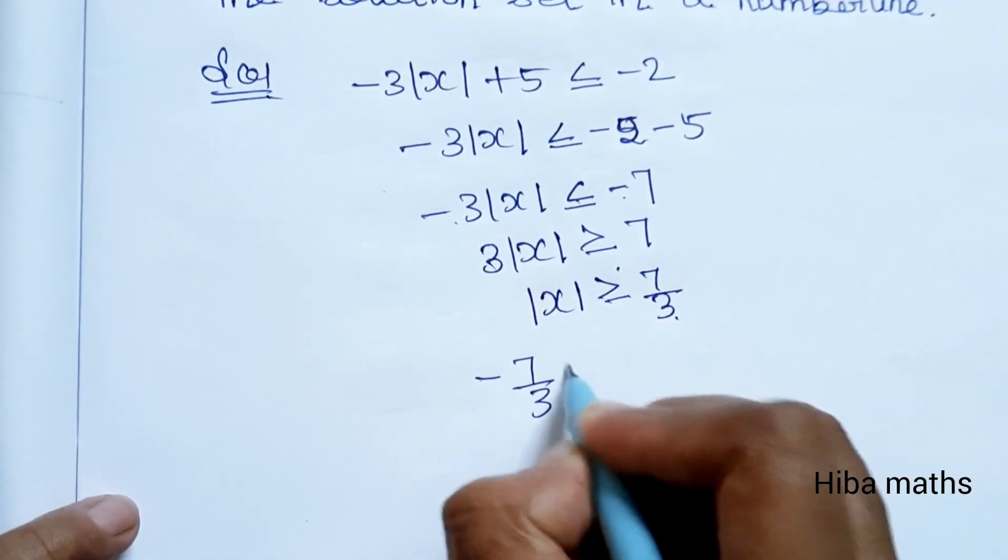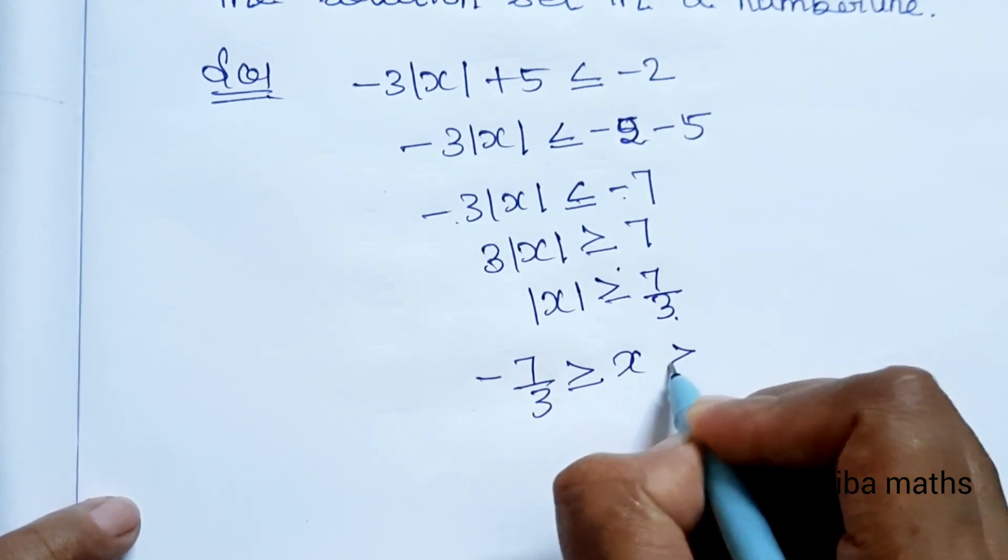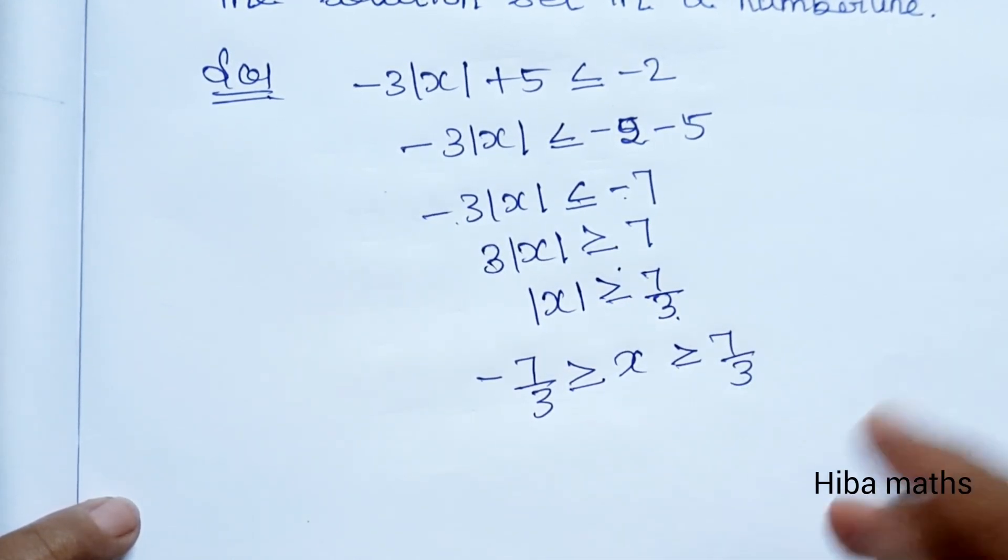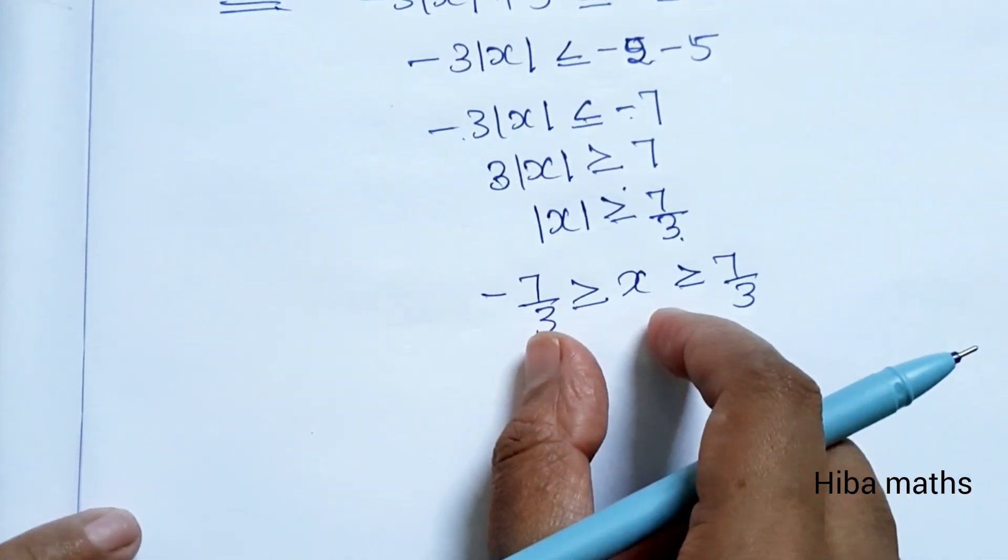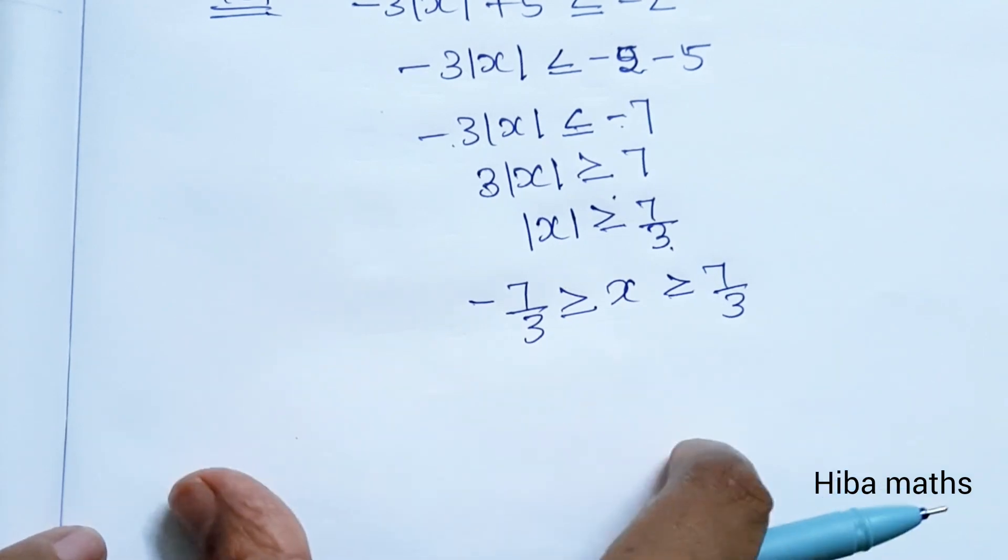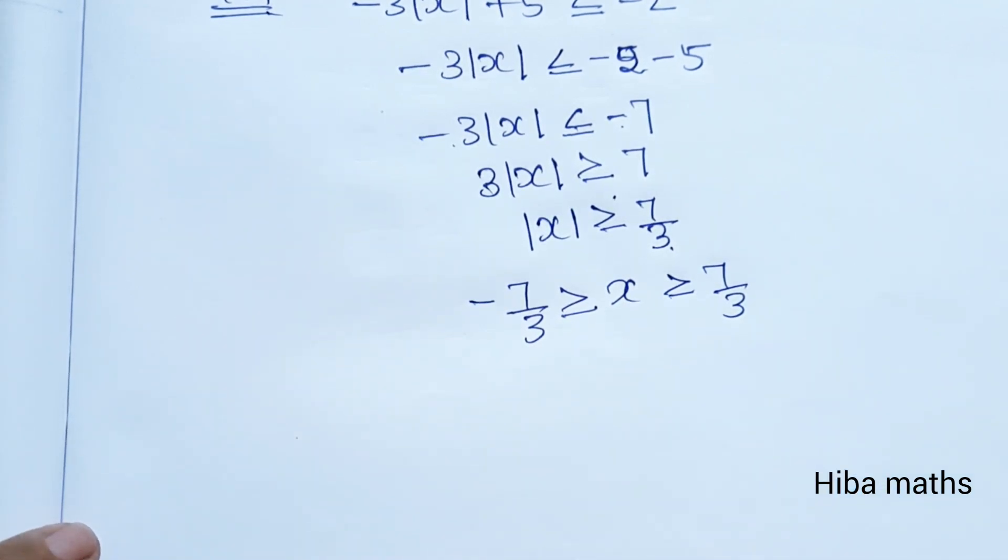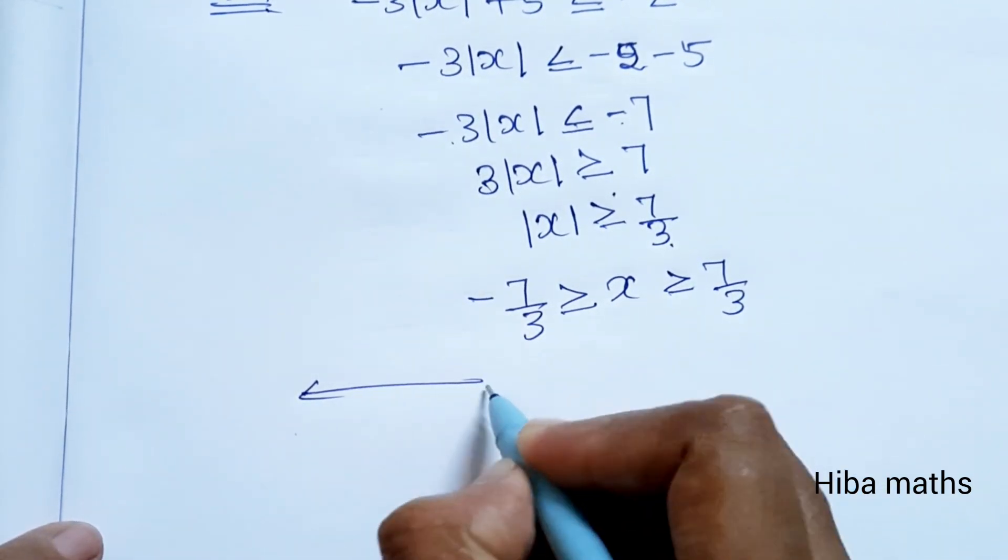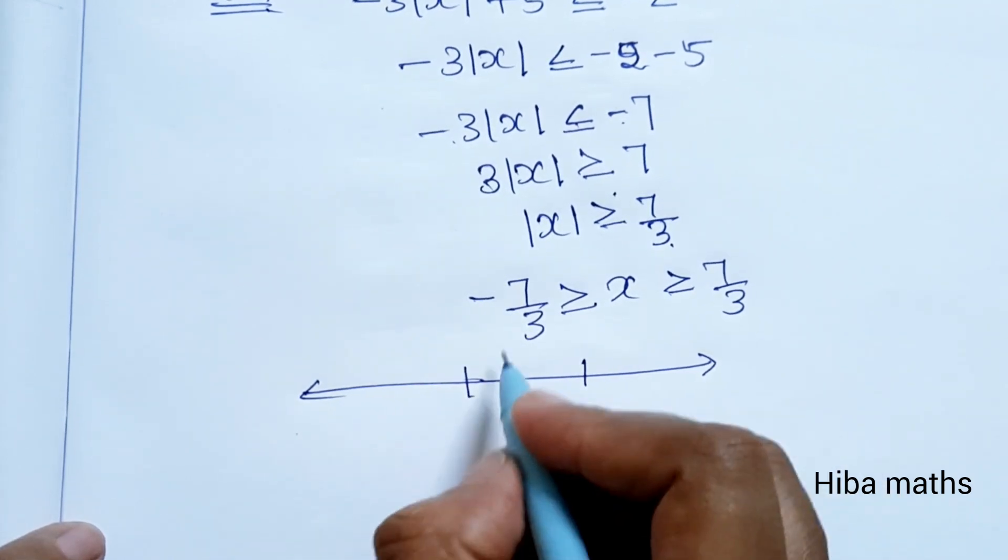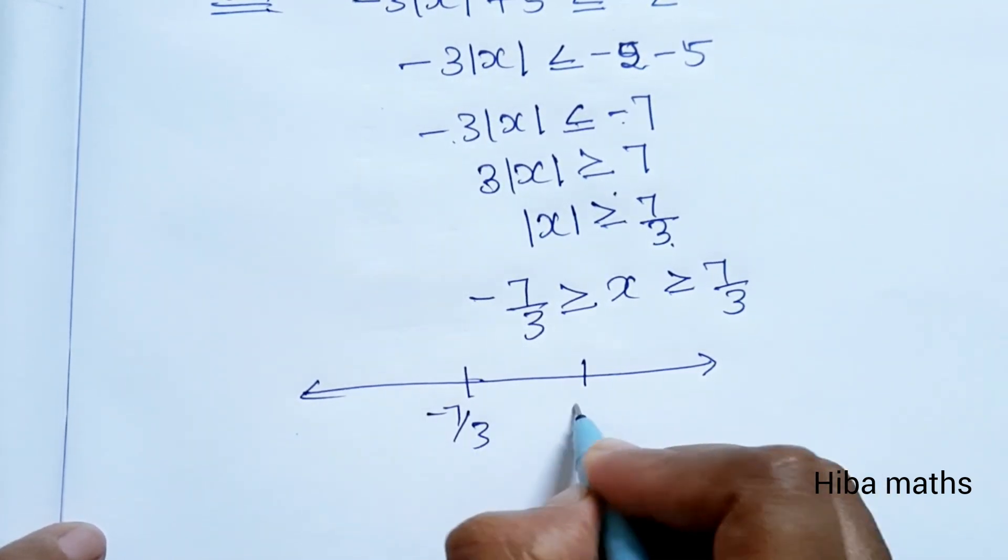Now |x| ≥ 7/3. When we have modulus of x greater than or equal to 7/3, this means x ≥ 7/3 or x ≤ -7/3.